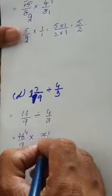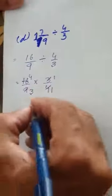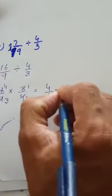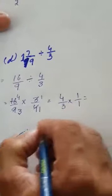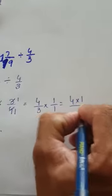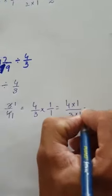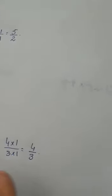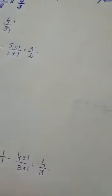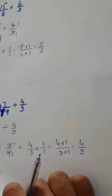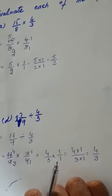We are left with 4 over 3 multiplied by 1 over 1, which equals 4 multiplied by 1 over 3 multiplied by 1, giving us 4 over 3. I have solved two parts of question number 3; the remaining two parts you will solve yourself.